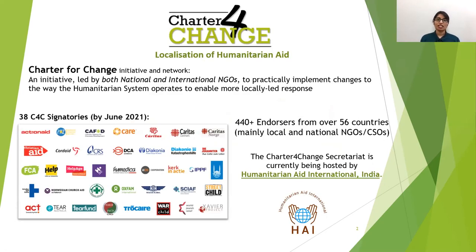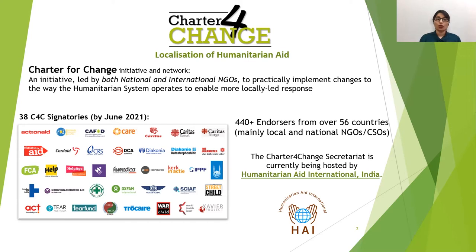The Charter for Change is a global network — an initiative led by local, national and international NGOs who have come together to practically implement changes in the way we work within the humanitarian architecture. It includes eight commitments based on localization, which INGOs have signed on to. At present, we have 38 Charter for Change signatory INGOs who have signed the Charter and have committed to making progress.